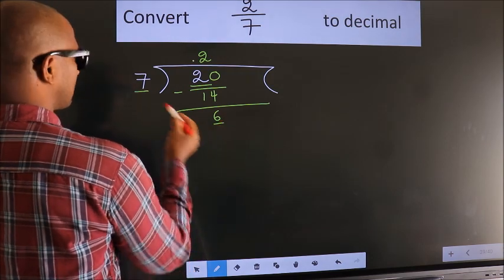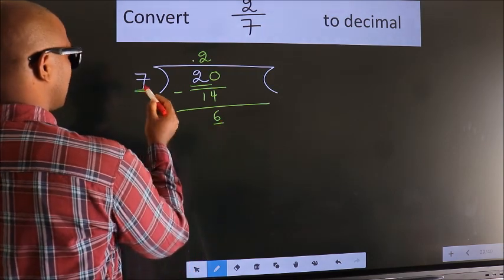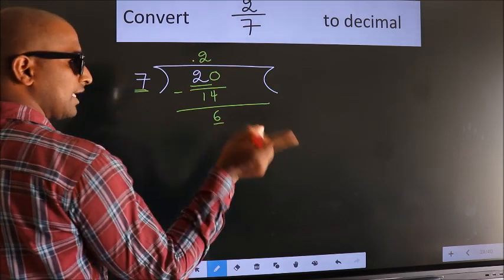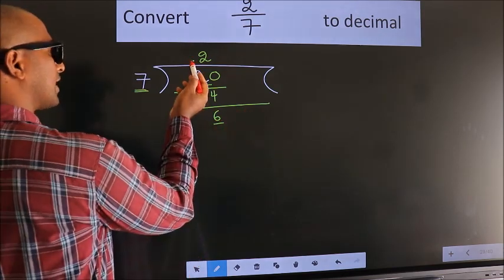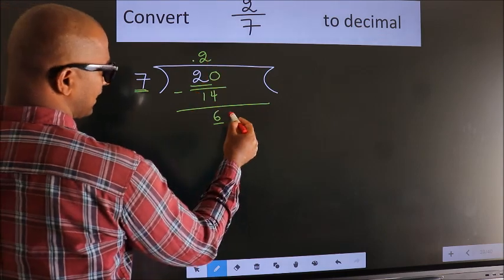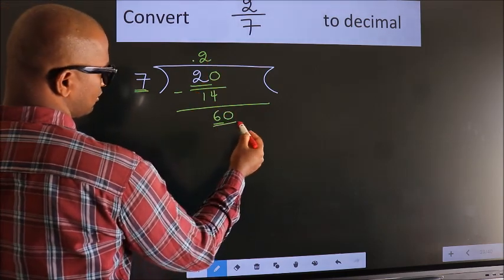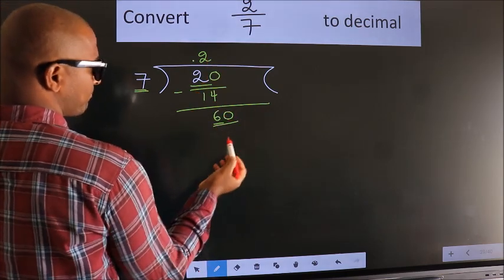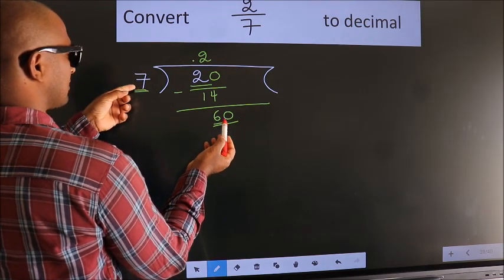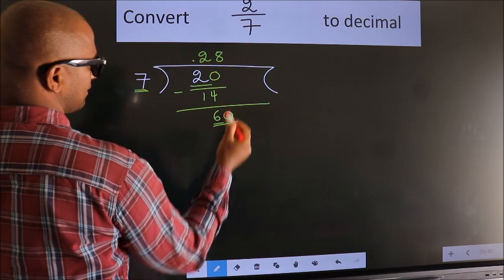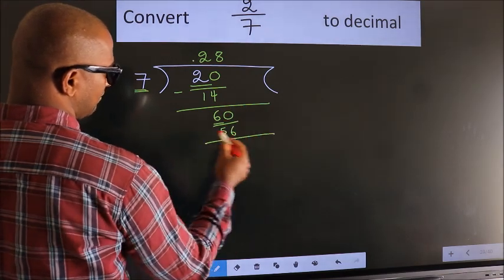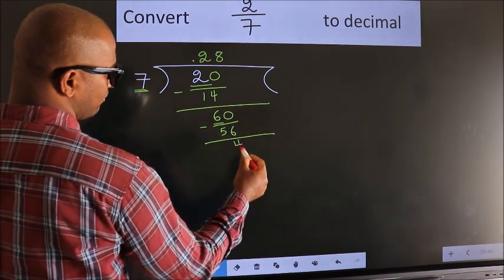Here we have 6, here 7. 6 is smaller than 7. And we already have the decimal, so we can directly take 0 — making it 60. A number close to 60 in the 7 table is 7 eights 56. Now we subtract and we get 4.